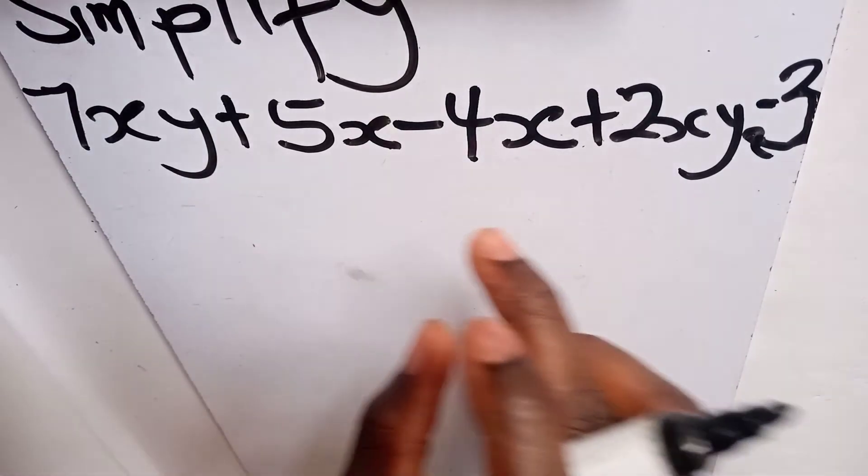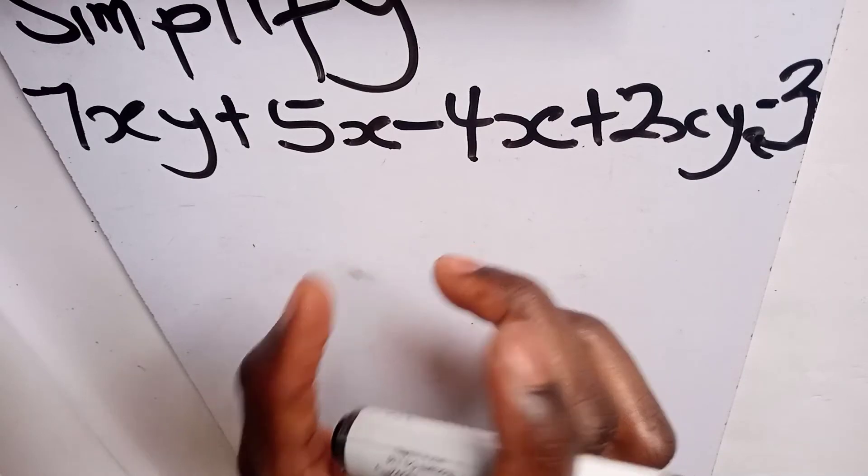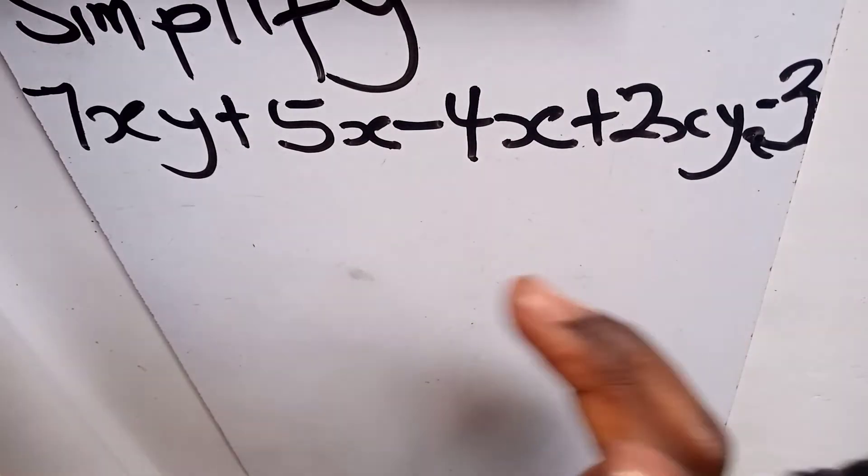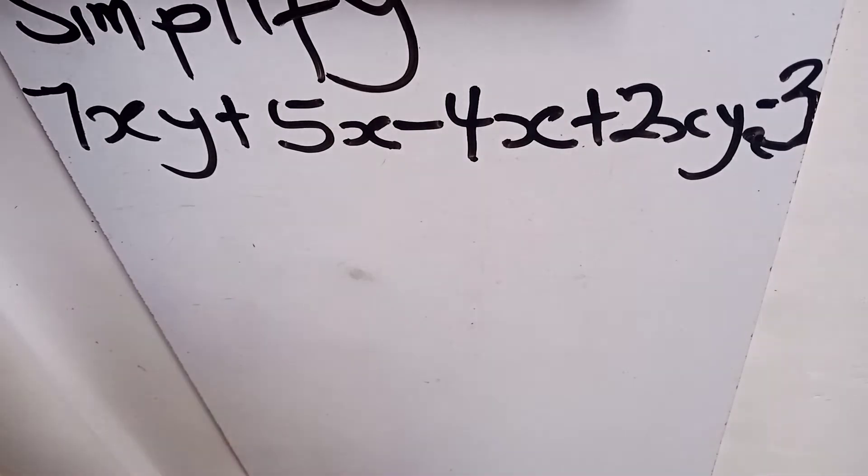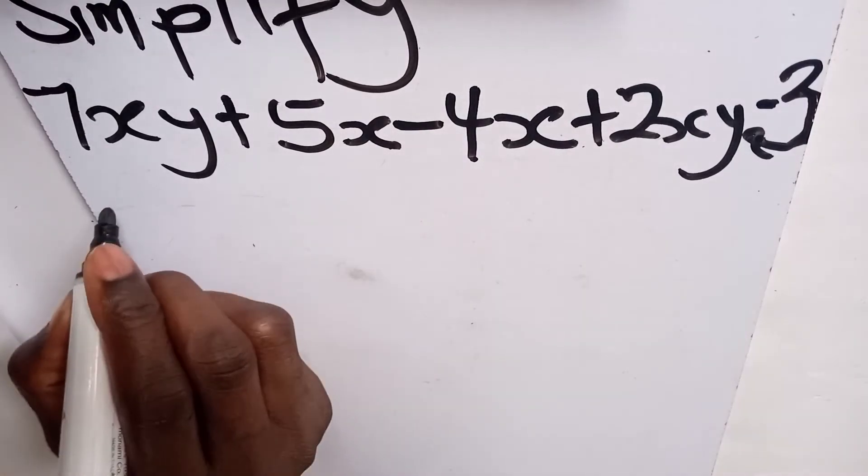We also have 5x and 4x, they are also alike. So in this case, we can rearrange them, make sure that those that are having the same terms are sent to one side. So we group like terms.